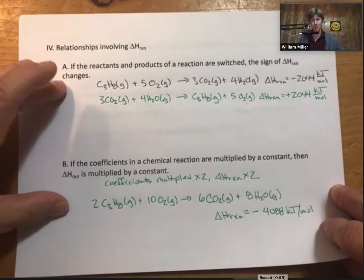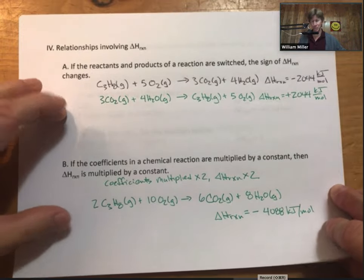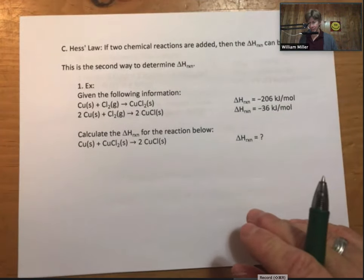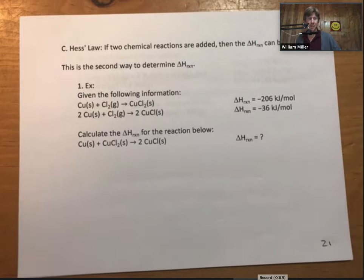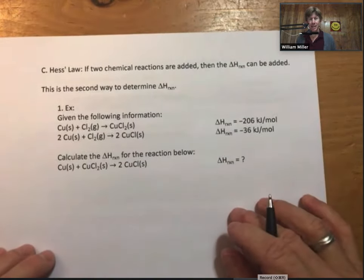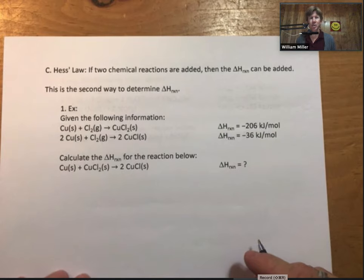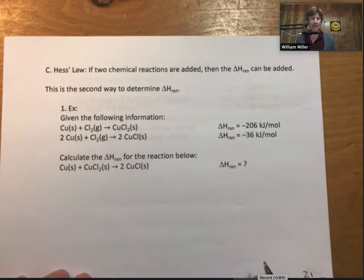Okay, so those are the two relationships we need. We're going to use these relationships in what's called Hess's law. For Hess's law, the third thing we need to know about delta H is that if two chemical reactions are added, then the delta H reaction can be added as well.